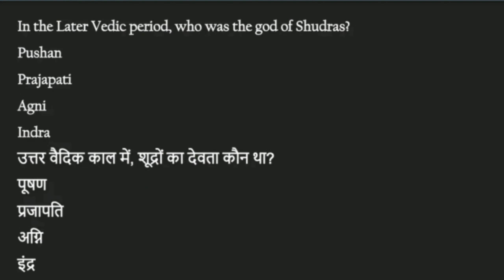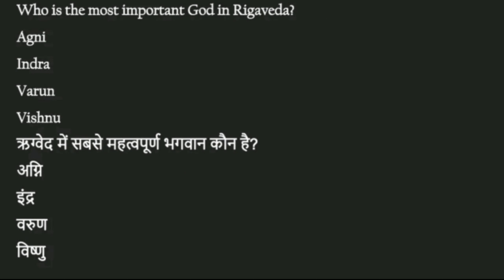Prashna: Uttarvedik kaal mein Shudron ka devta kaun tha? Iska answer hai - A. Pushan. Prashna: Rigveda mein sabse mahatvapurna bhagwan kaun hain? Options: Agni, Indra, Varun, Vishnu. Iska answer hai - Indra.